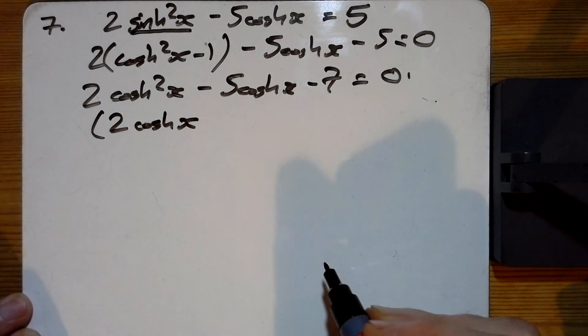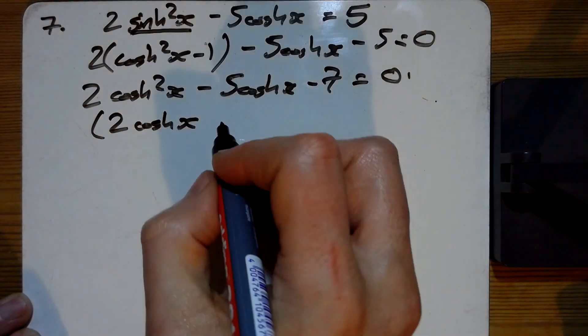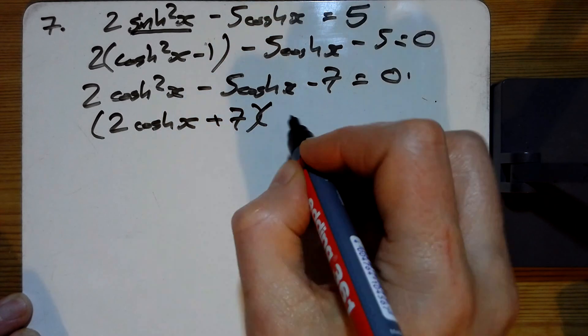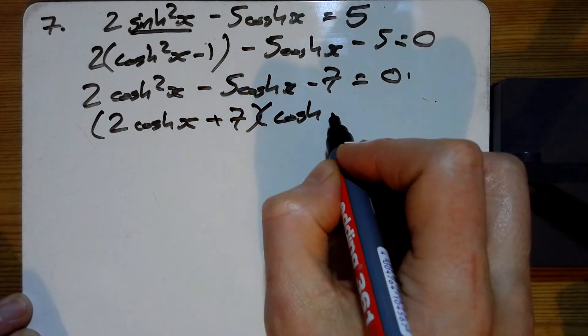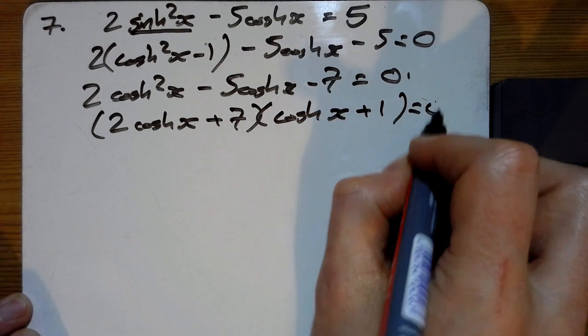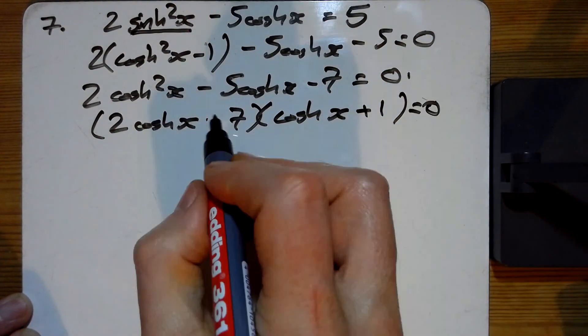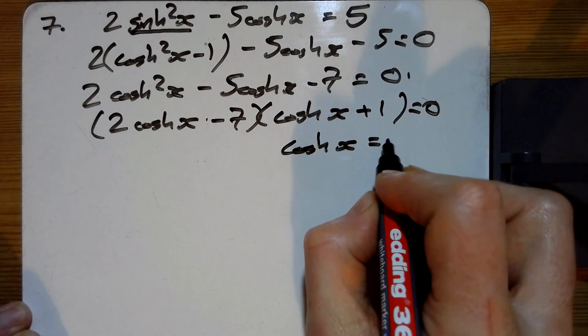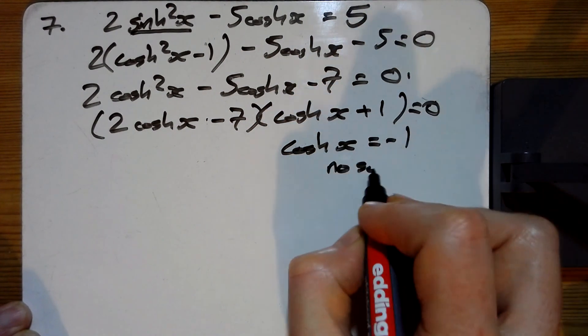Let's factorize that. We've got 2coshx times coshx... that's going to be +1 and -7. So (2coshx - 7)(coshx + 1) = 0. One answer here is coshx = -1, which has no solutions.